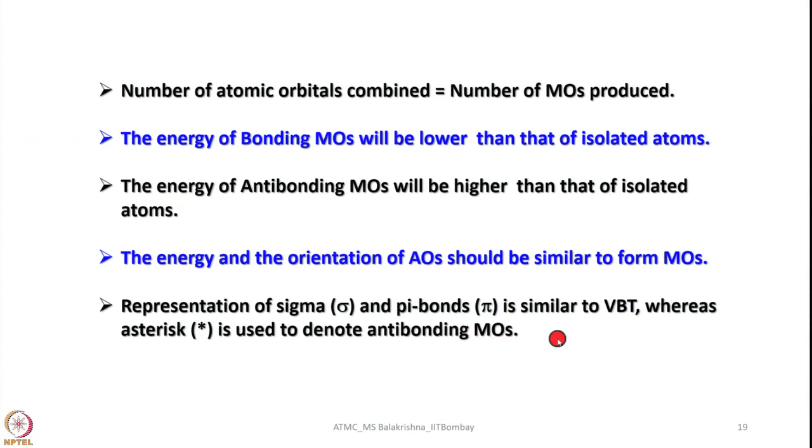For example, if we take px it has to interact with px only — px cannot interact with py. The representation of sigma and pi bonds is similar to what we use in valence bond theory. For sigma bonds we use the Greek symbol sigma, and for pi we use pi, whereas for antibonding orbitals — irrespective of whether sigma or pi — we put a star as a superscript on the right side of that symbol.